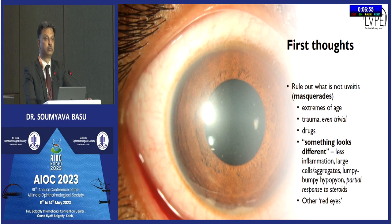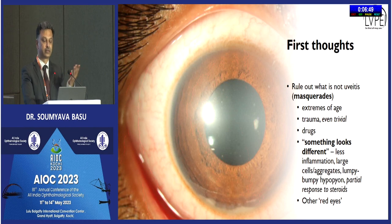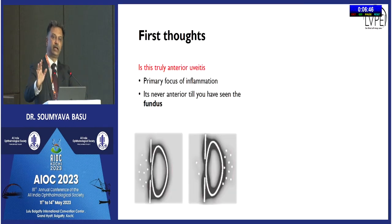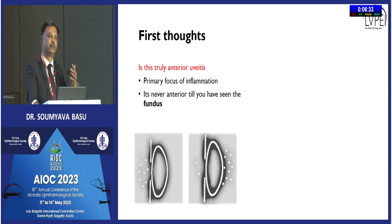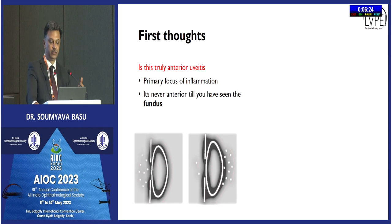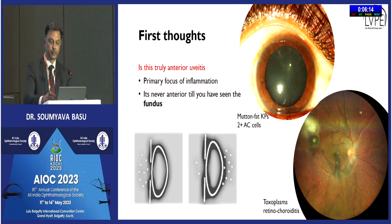Rule out other causes of red eye — conjunctivitis is often confused with uveitis and vice versa. Once you have made sure this is truly uveitis, you have to find out the primary focus of inflammation. If you do not examine the fundus properly you might call it anterior uveitis and keep treating the anterior segment while disease progresses in the posterior segment. It is never anterior until you have seen the fundus very carefully, not just a cursory examination. A patient with mutton fat KPs had a large retinitis lesion in the supratemporal periphery — a case of toxoplasma retinochorioretinitis — missed by the first doctor who only examined the posterior pole.